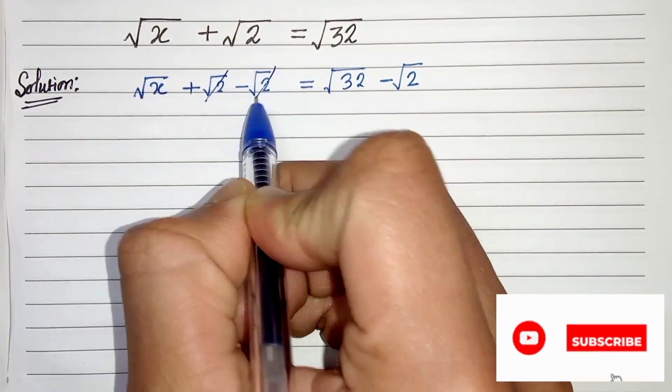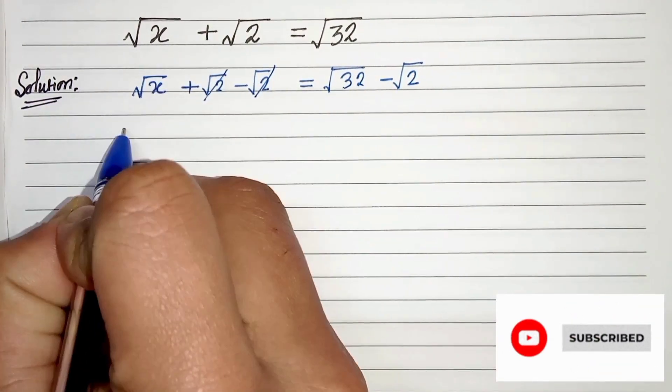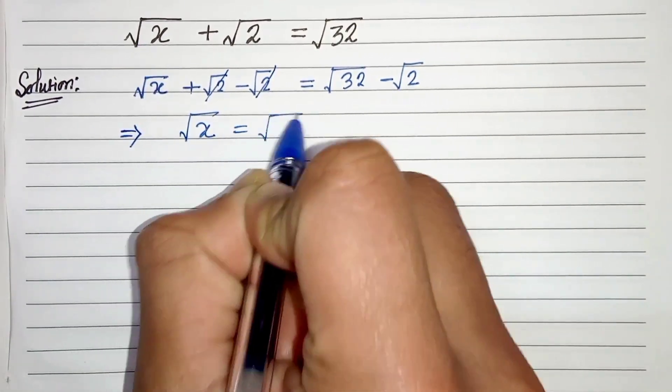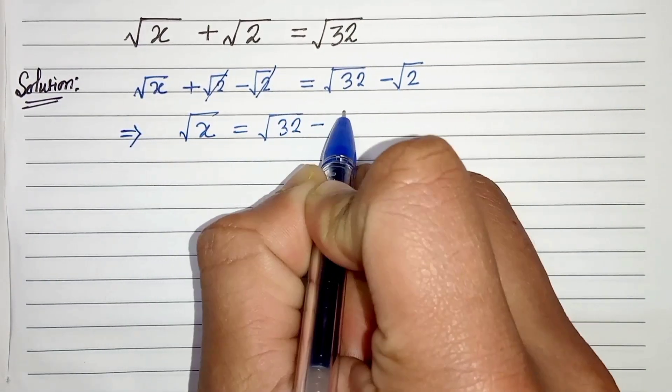√2 and √2 gets cancelled. So in the next step we can write √x equals √32 - √2.